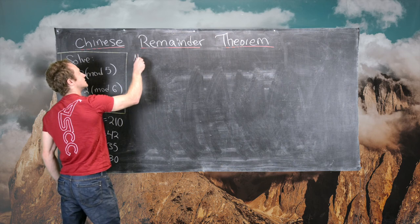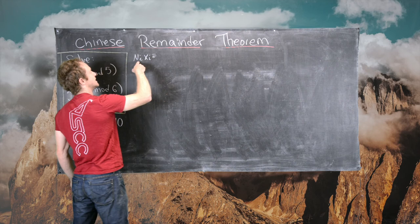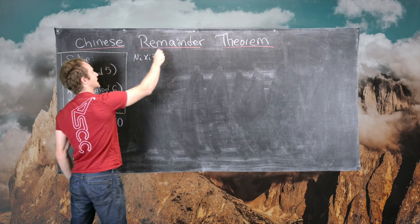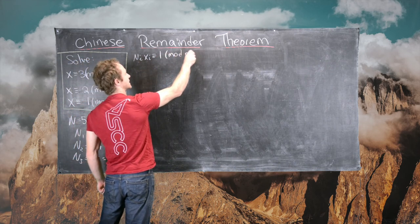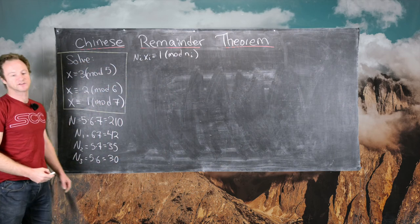In other words, we want to solve the linear congruence capital Ni Xi is congruent to 1 mod little ni, where the capital Ns are given here and the small Ns are given here.